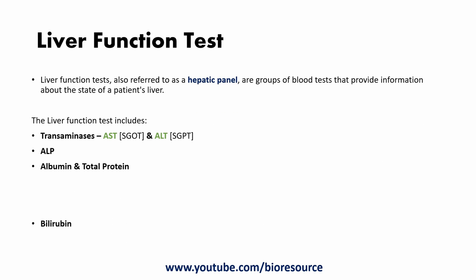The liver function test is also referred to as the hepatic panel. These are a group of blood tests that provide information about the state of a patient's liver. The liver function tests include transaminases, alkaline phosphatase, albumin and total protein, bilirubin, GGT, lactate dehydrogenase, and prothrombin time. In this video we will cover the liver function tests related to transaminases, that is AST and ALT.